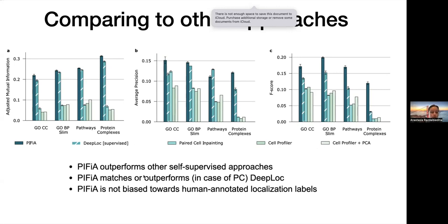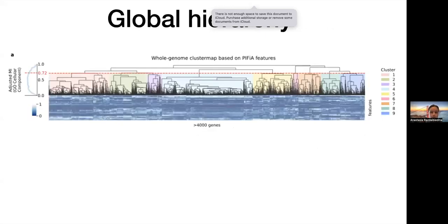It's also interesting that PFIA matches or outperforms the supervised DeepLoc, meaning we don't necessarily need to rely on supervised labels. PFIA is not biased towards manually annotated labels, yet can contain a variety of functional information.